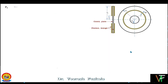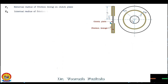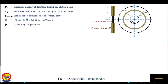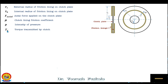Here r1 is the external radius and r2 is the internal radius of the friction lining on the clutch plate. F_axial is the axial force applied on the clutch plate, acting in the normal direction. μ is the clutch lining coefficient of friction, p is the intensity of pressure, and T_c is the torque transmitted by the clutch. This axial force is applied by the diaphragm spring, keeping the clutch plate in contact with the flywheel during engagement.